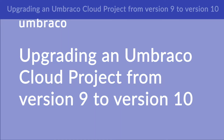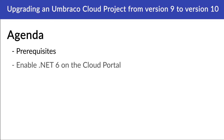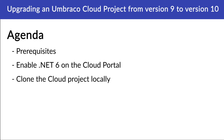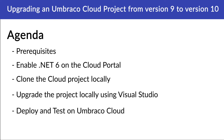Let's take a quick look at what we're going to do in this video. First off, we'll take a look at the prerequisites. After which we'll enable .NET 6 on the cloud portal for each environment of the cloud project. Then we'll clone down our project from cloud to our local system. Following which, we'll upgrade the project locally using Visual Studio. And finally, we'll deploy the changes from local to cloud and verify the upgrade on the cloud portal.